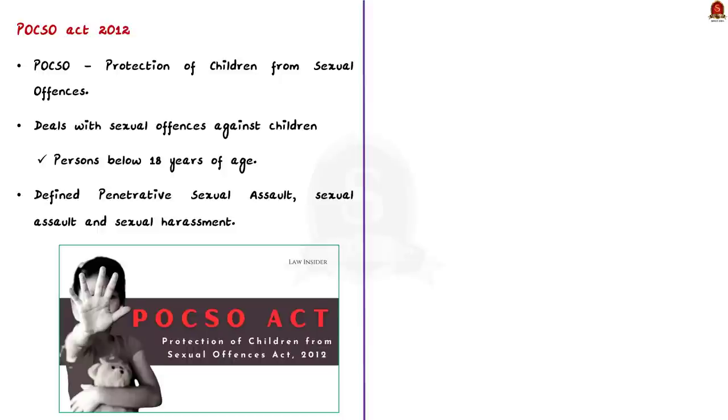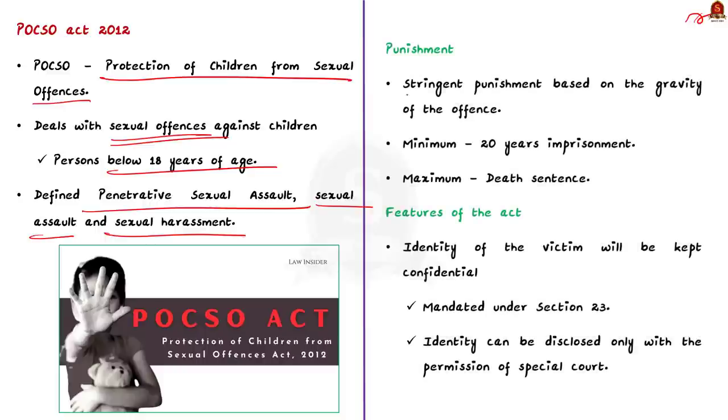POCSO stands for Protection of Children from Sexual Offenses. As the name suggests, this law is all about protecting children from sexual offenses. It applies to children who are below 18 years of age. The act defines different types of sexual offenses such as penetrative sexual assault, sexual assault and sexual harassment. One of the key features of the POCSO Act is that it provides for strict punishment for these offenses. The severity of the punishment depends on the seriousness of the offense and it could range from a minimum of 20 years imprisonment to death penalty. Now, let us talk about some important aspects of the POCSO Act.